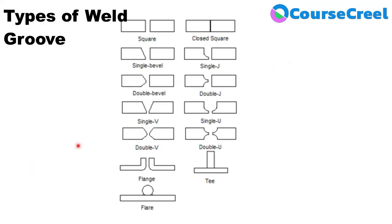This diagram shows different types of welding grooves which we can use for different welding applications. These grooves include: square groove, single bevel groove, double bevel groove, single V groove, double V groove, flange type, flare type, close square, single J, double J groove, single U groove, double U groove, and T. For T joints, fillet welding is the most convenient type. According to the application or the design of the component, we choose the appropriate type of groove.